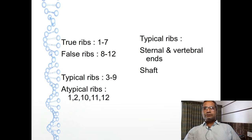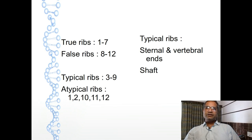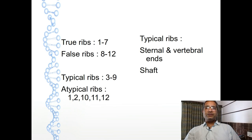Out of 12 ribs, some ribs show the same features and are known as typical ribs. Ribs 3 to 9 are typical ribs having similar features. The remaining ribs are atypical ribs having different features, which are the 1st, 2nd, 10th, 11th, and 12th ribs.